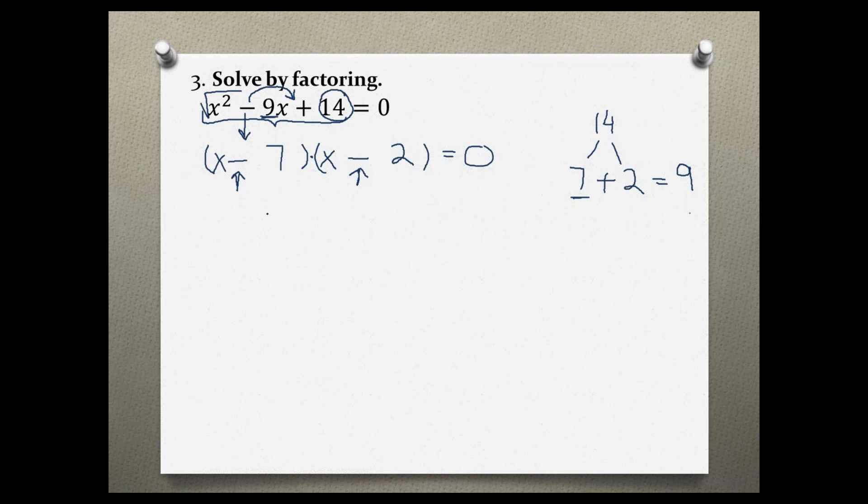So x minus 7 equals 0 and x minus 2 equals 0. Solving for x, I'm going to add 7 to both sides and I am left with x equals 7.